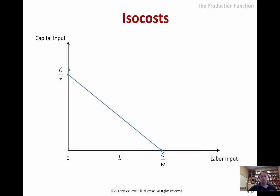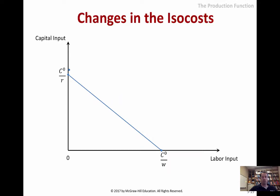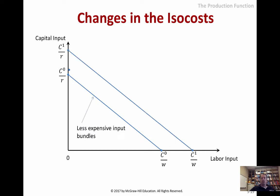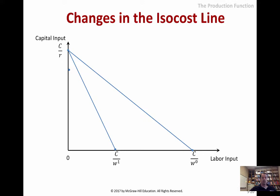This isocost line looks like a budget constraint, and it's really the business idea of how you're going to maximize production given your cost structure — very similar to the utility example. If you change costs — say everything costs 10% more — it's going to shift the line out to the right. We'd also see just one of the input costs change, which is like if just one of the prices changed in the consumer chapter.